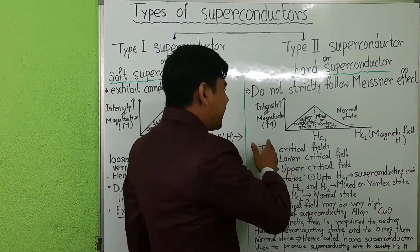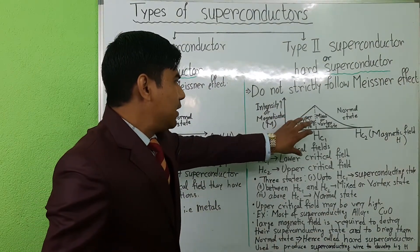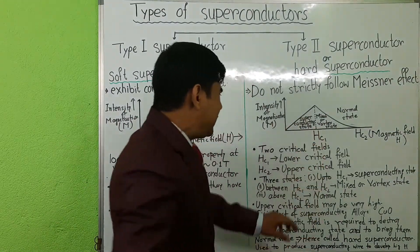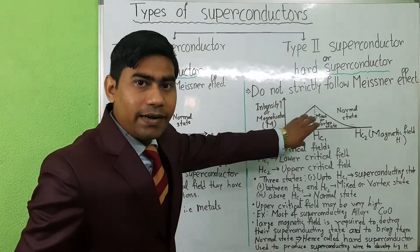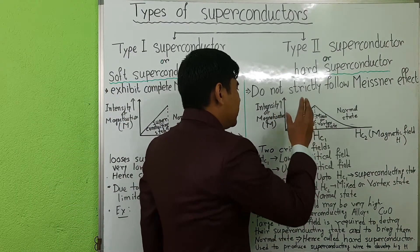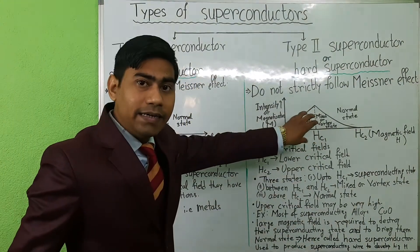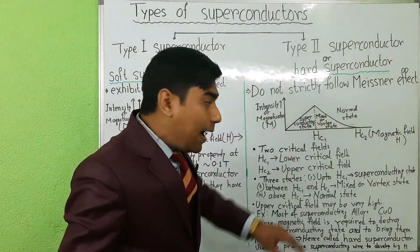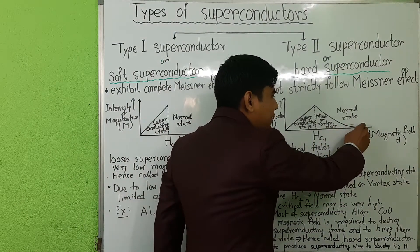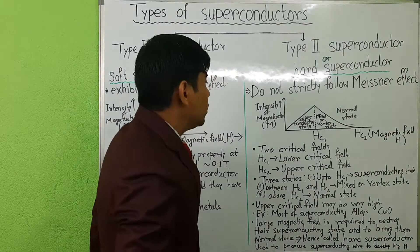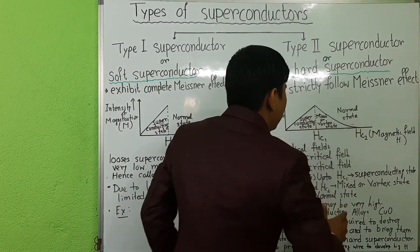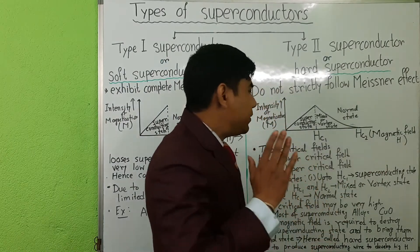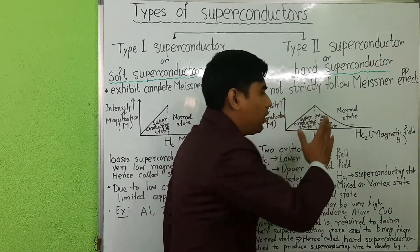Up to the critical field Hc1, this type of material shows perfect diamagnetism. Magnetic flux does not penetrate into the superconductor, and the material is in the superconducting state. After Hc1, magnetic flux starts to penetrate and the penetration increases until Hc2 is reached. Between Hc1 and Hc2, it is a mixed state or vortex state — a mixture of superconducting state and normal state.